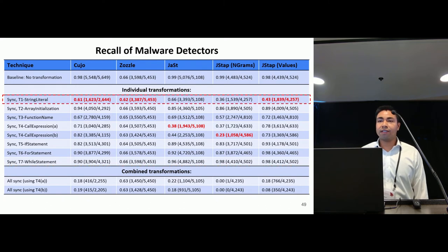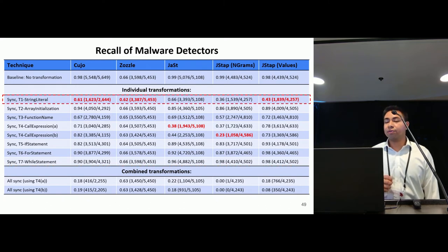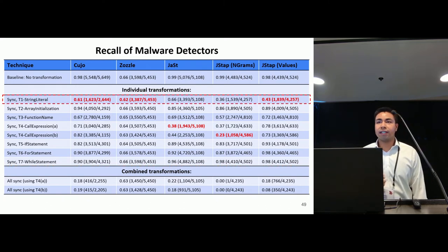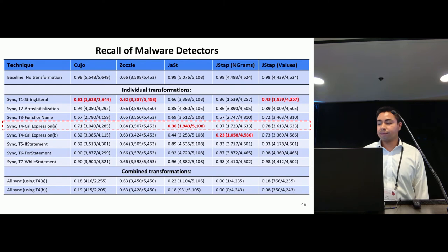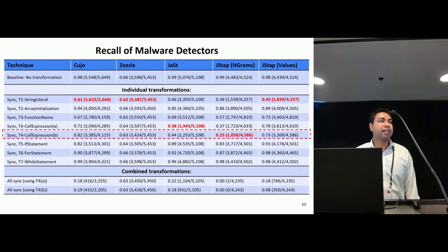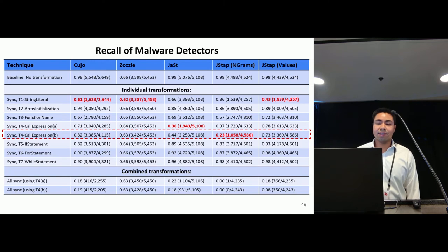Different techniques work best against different detectors. For example, rule T1 performs best against Cujo, Zazzle, and Jstop in values mode. Rule T4A performs best against Jast. And rule T4B performs best against Jstop in n-grams mode.